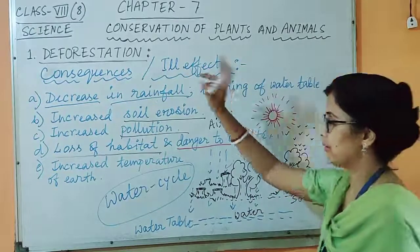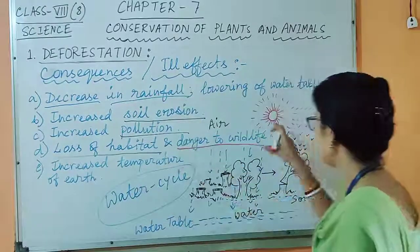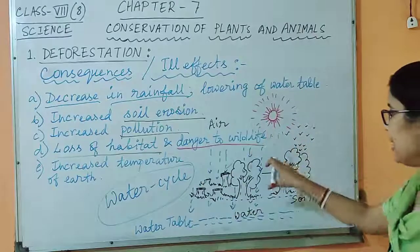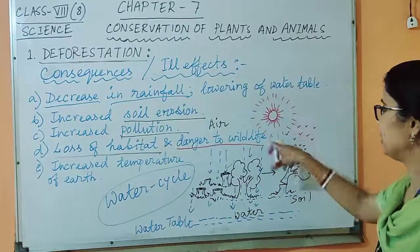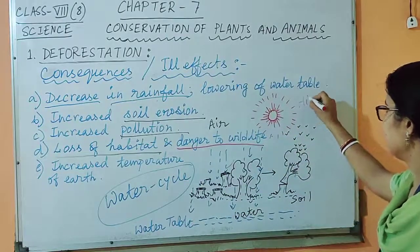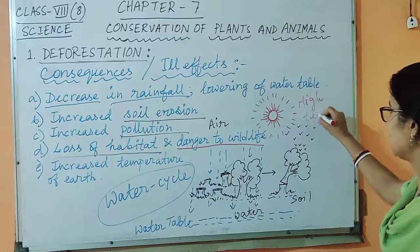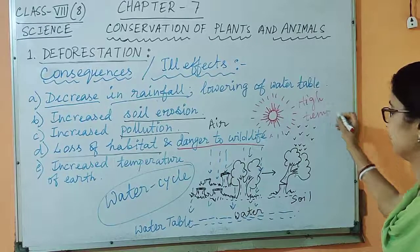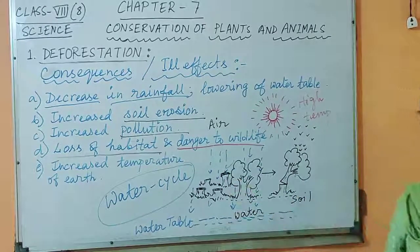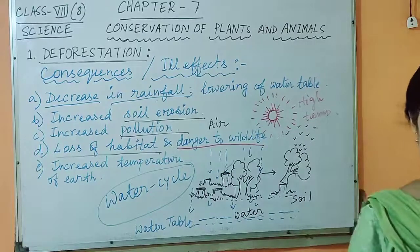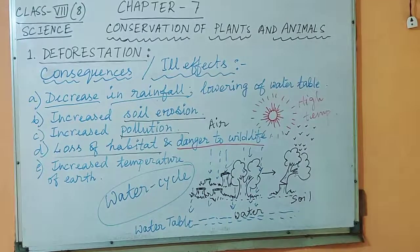Also, deforestation directly leads to increased temperature of the earth. You can see how temperature increases. It leads to high temperature on earth. Please write down the different consequences or effects of deforestation.